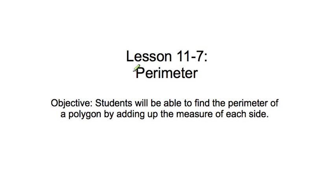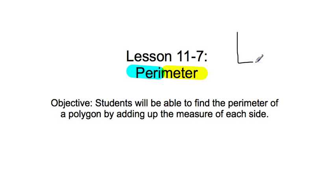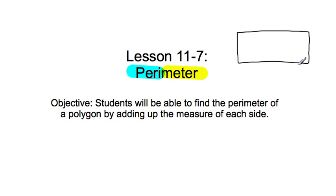Let's take a look at the word first — perimeter. It's made up of 'peri' and 'meter.' Peri is a root that means around, and meter is the root that means measure. So this word literally means to measure around. We're talking about the length around a shape, not the inside part — around the shape.